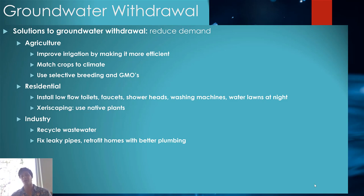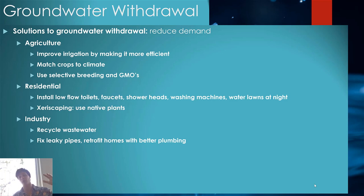Residential use is only about 10% of consumptive water, but improvements still help. Low-flow toilets have reduced water use from about 2 gallons per flush down to about a gallon, or even half a gallon for high-efficiency models. Low-flow faucets, low-flow shower heads, water-efficient washing machines, and watering your lawn at dawn so it doesn't evaporate in the midday heat are all ways to reduce water demand and save money.